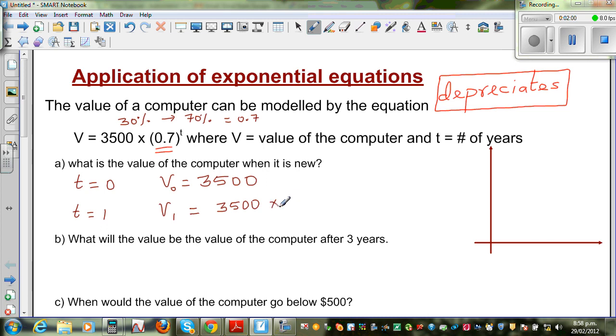times 0.7, 0.7 to the power 1, which is nothing but 70% of this. When you're multiplying by 0.7, you're finding 70%. So when you're finding 70% of something, it is depreciating by 30%.